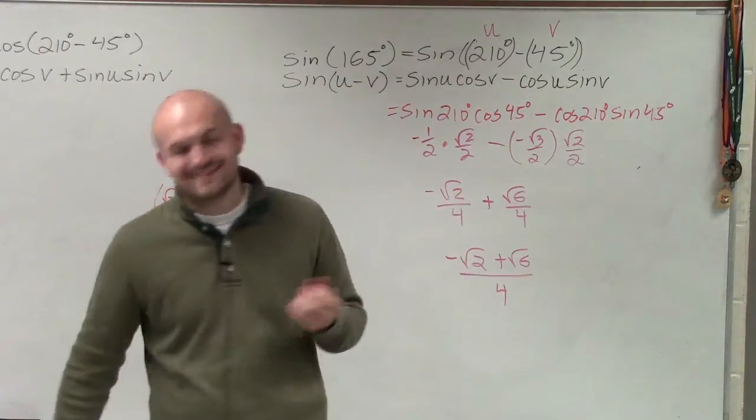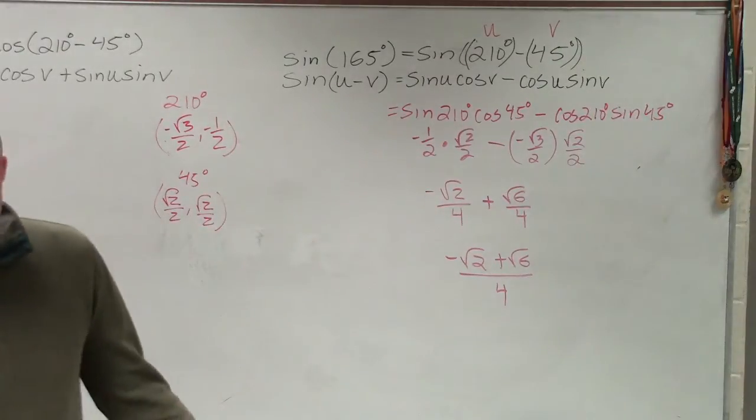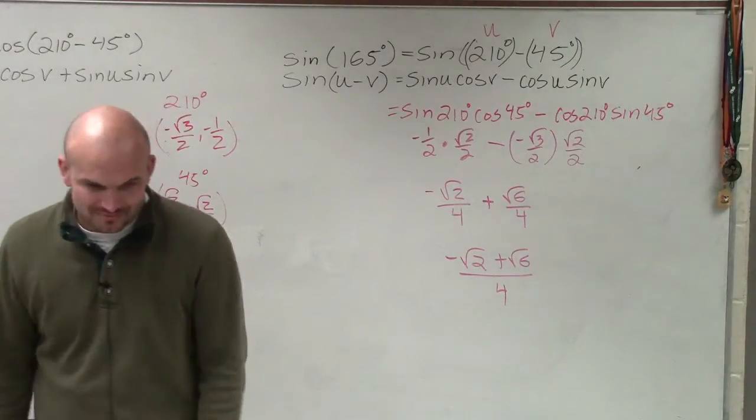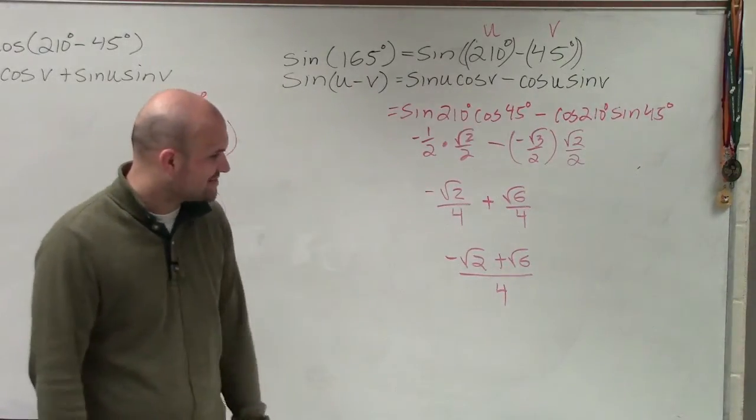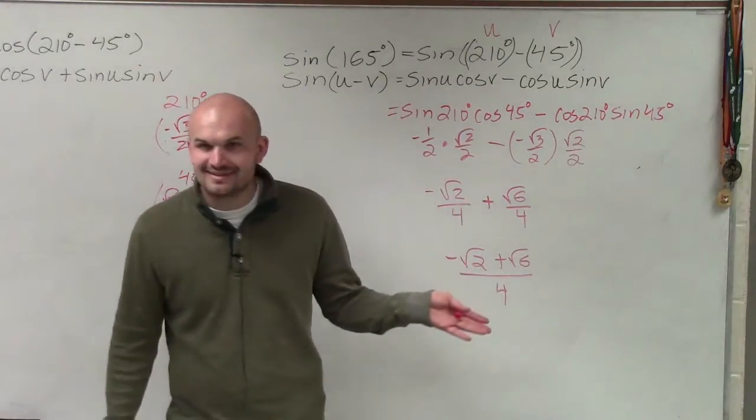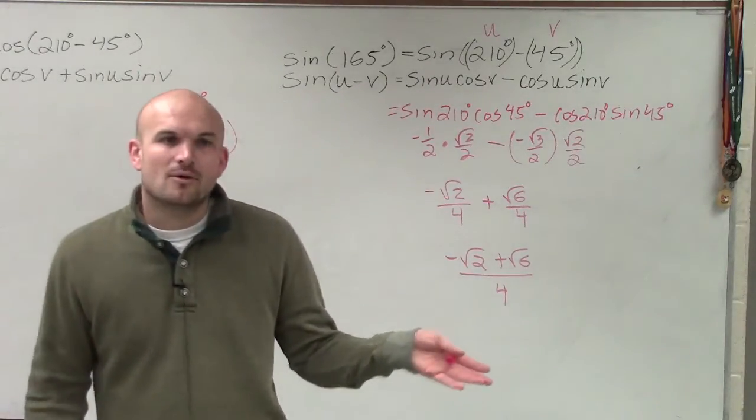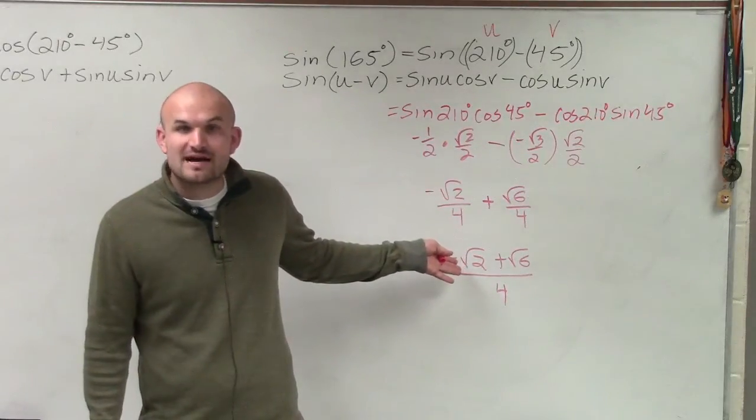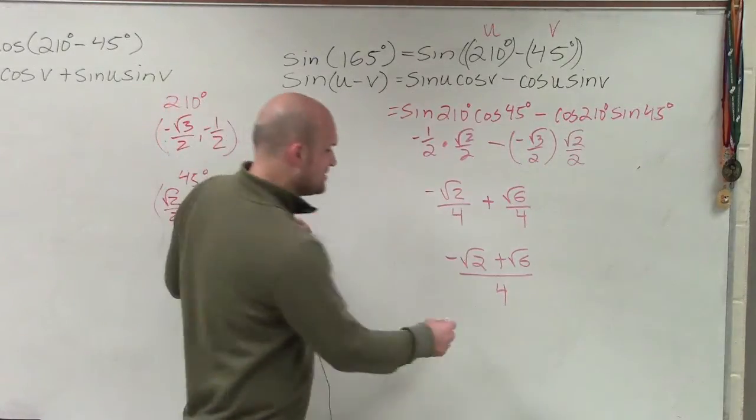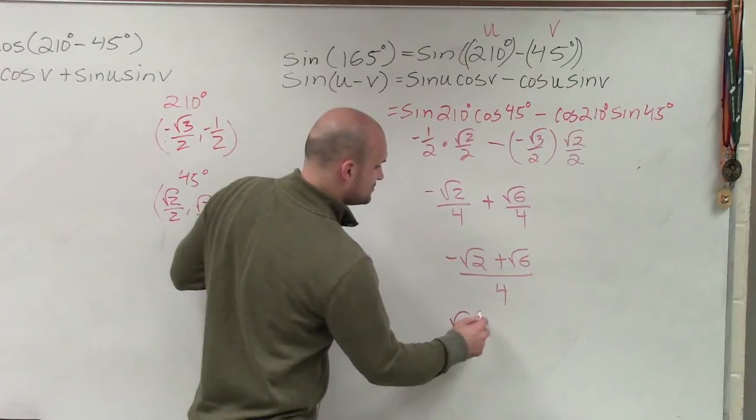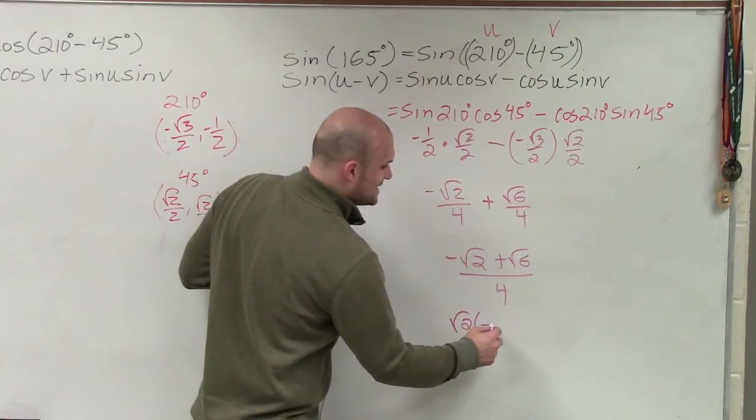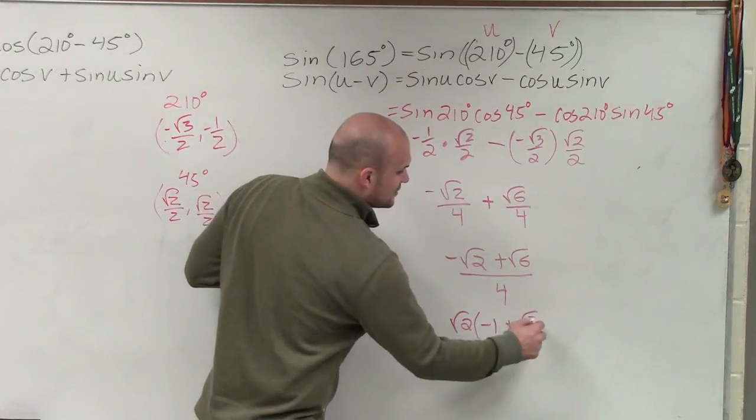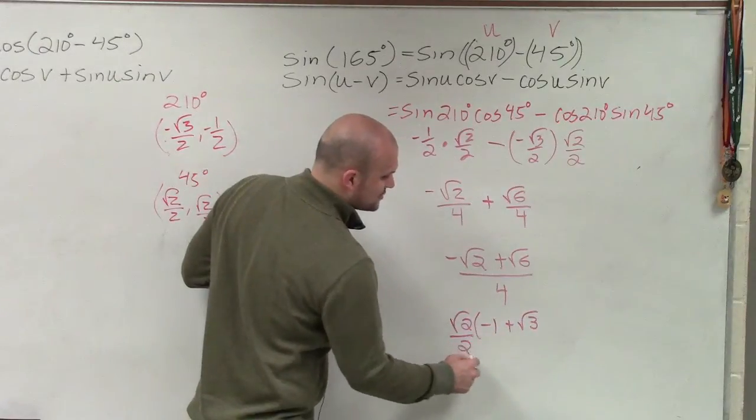And I forgot, there's actually one more way we could actually simplify these answers. But you cannot divide the whole answer by 2. But what we can do is you can simplify. These have common factors, right? What you can do is factor out a square root of 2. That's going to leave you with a negative 1 plus the square root of 3. Factor out a square root of 2 over 2.